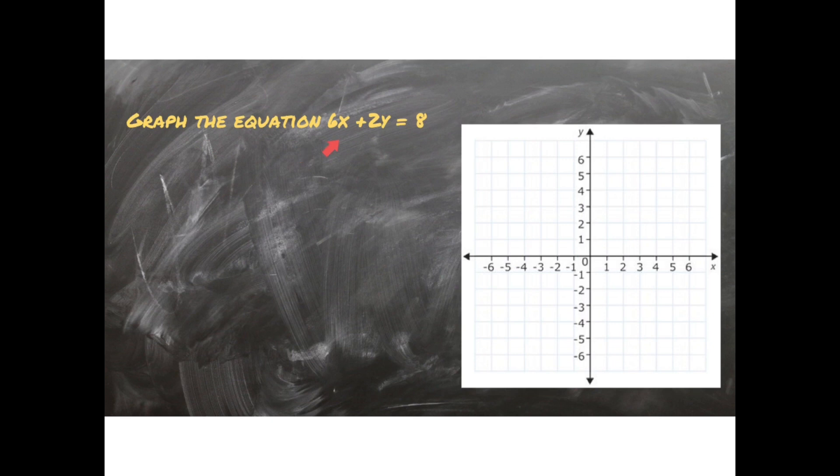I have graphed the equation 6x plus 2y equals 8. So first of all this equation does not follow the equation y equals mx plus b, and this is basically the only form that we know how to graph. So the way that we are going to do this is by taking my equation 6x plus 2y equals 8 and change it into y equals mx plus b.